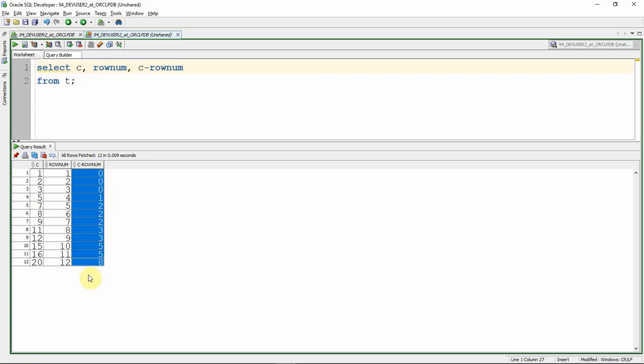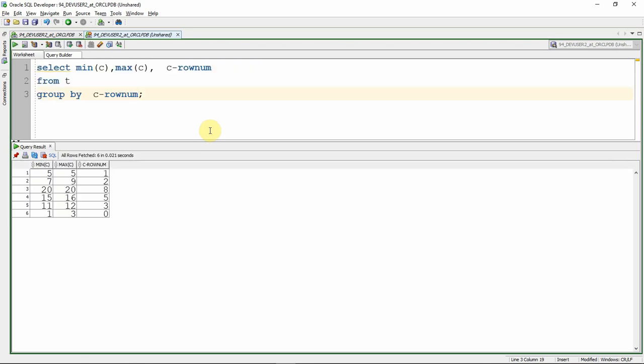So this is what we are going to use it to group the data. So now what I'm going to say, anyway, I'm not interested in the row number now. I just want the column name, column value and the group information. So now what I can use, I can see minimum of column, comma maximum of column. Since it is a group function, we need to use the group by clause. So group by the condition that is C minus row number, that is a column value minus row number value.